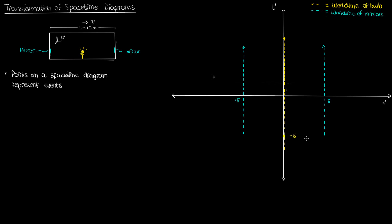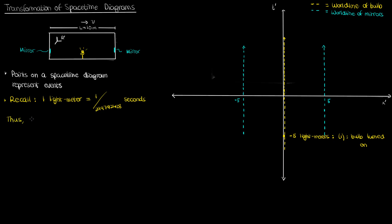Let's suppose that I turn on my bulb at a time t' equals negative 5 light meters. I'll call this event 1. A light meter is the time it takes for light to travel 1 meter, roughly 300 millionths of a second. Using light meters as the unit of time scales every velocity according to the speed of light, so the speed of light equals 1 in these units. After 5 light meters, the photons will advance 5 meters — one photon moves right and hits the right mirror at plus 5 meters, while the other moves left and hits the left mirror at negative 5 meters.